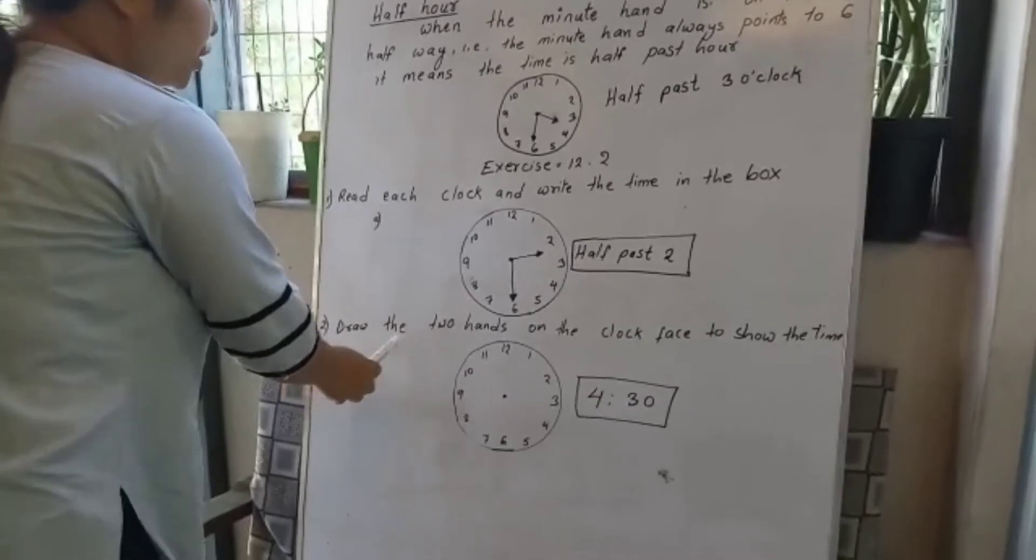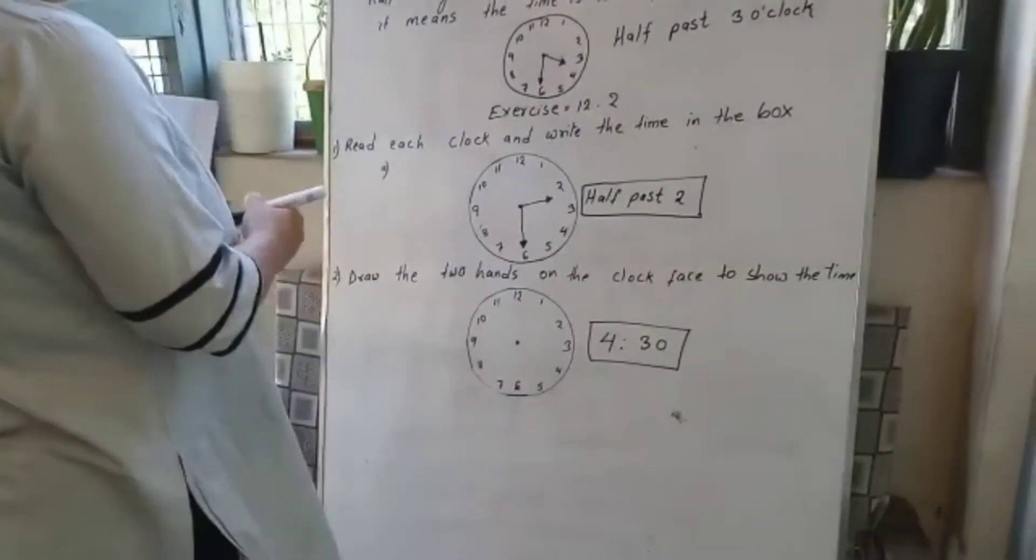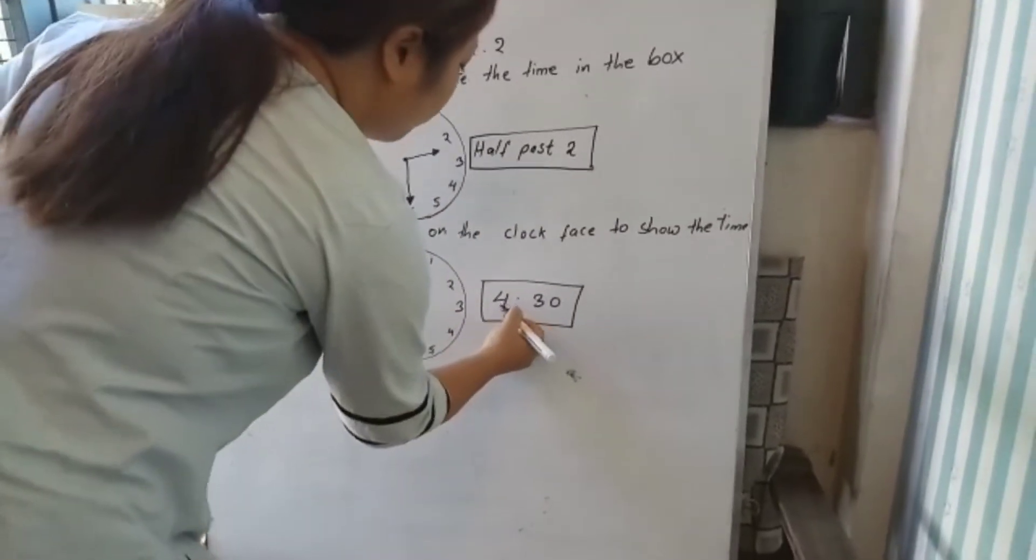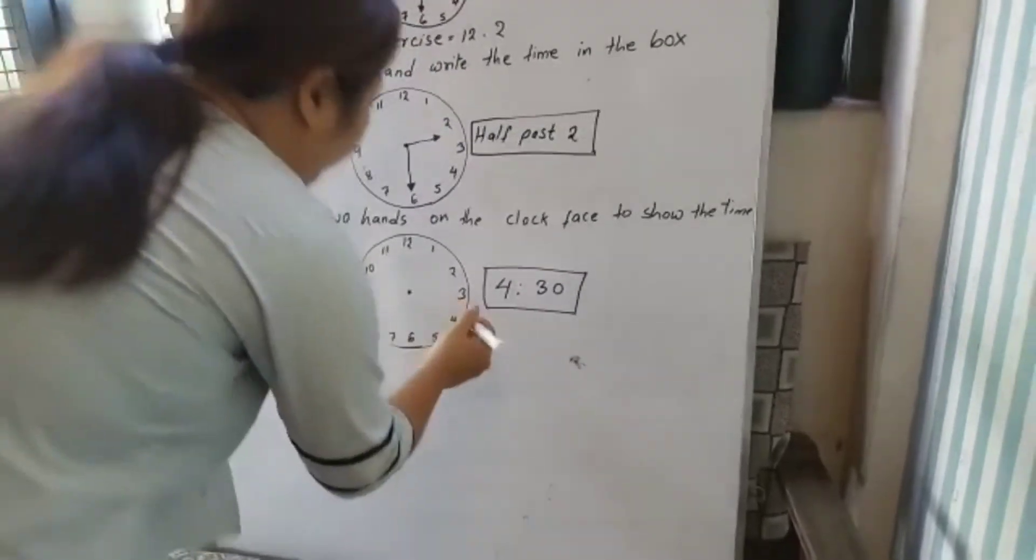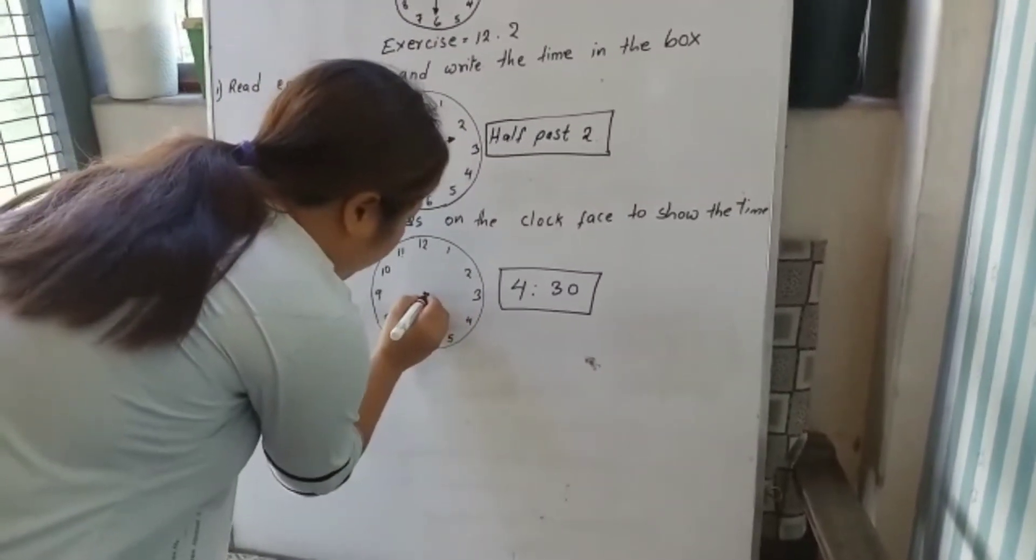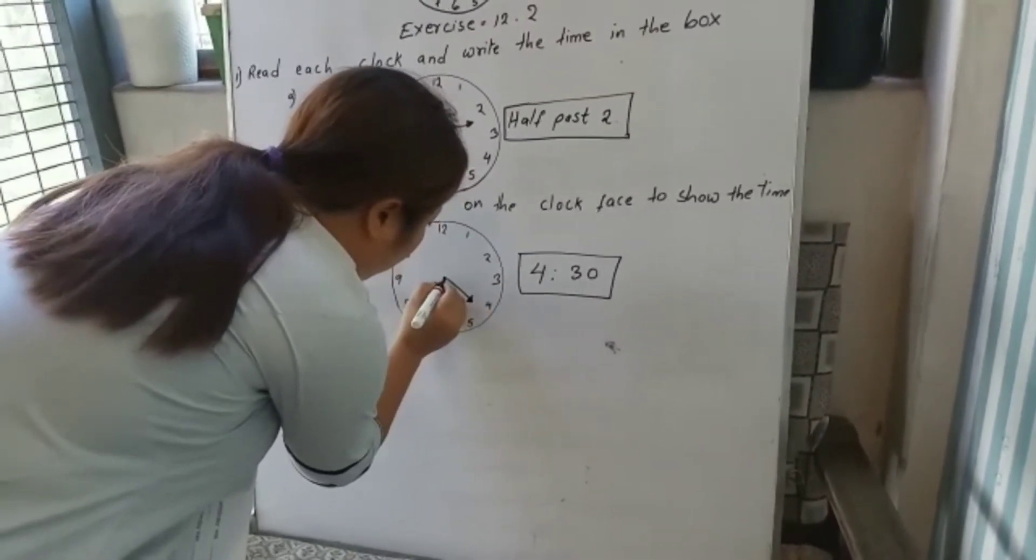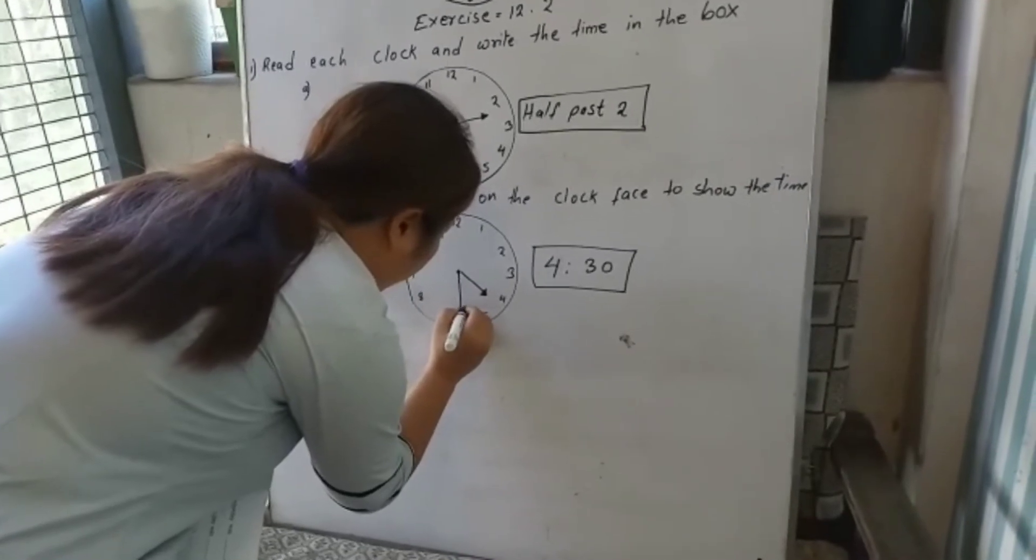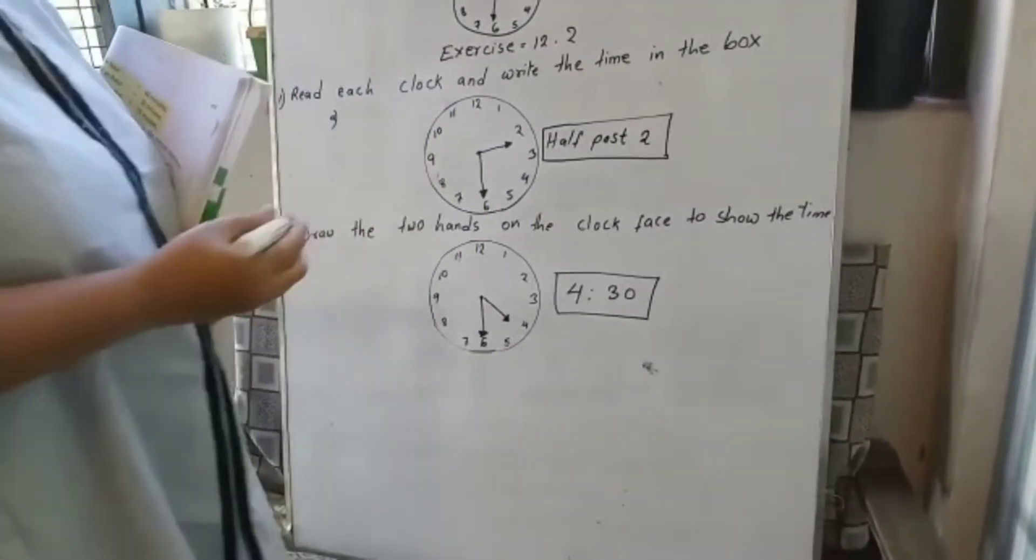Question number 2: draw the two hands on the clock face to show the time. We have to draw the two hands on this clock. The time is half past 4, so the short hand will be at 4 and the long hand will be at 6.